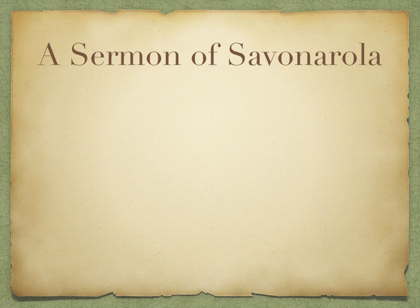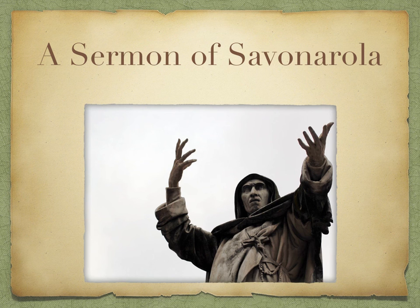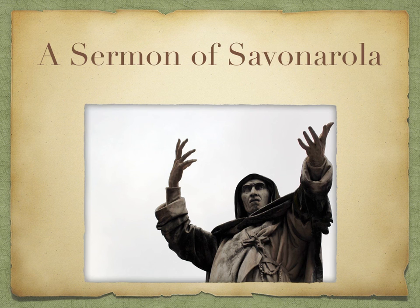There's a really interesting primary source embedded in this section — kind of creepy — a sermon by Savonarola. Savonarola was a Dominican monk who basically took over Florence at the end of the 15th century. When Florence was going through a lot of stress as Italian politics was beginning to come apart, Savonarola was this religious fanatic who took over the city. McKay includes a primary source which lays out his program and one of his sermons, which is interesting, fascinating, and kind of creepy. You're reading that in the context of this emerging Italian Renaissance and its stresses.